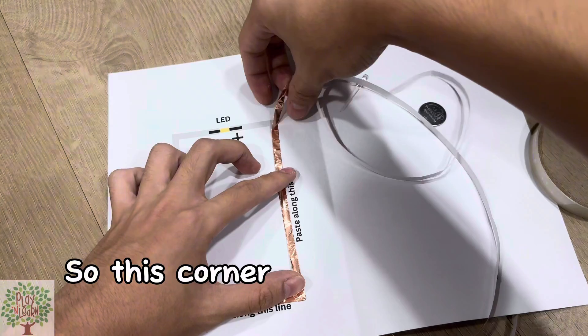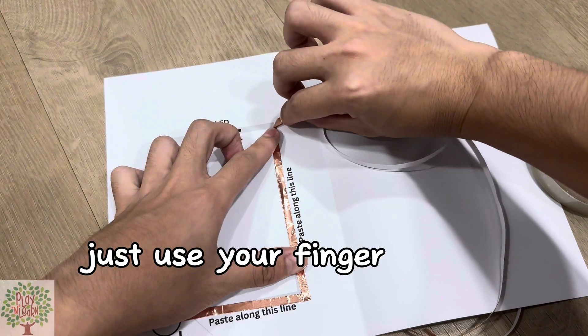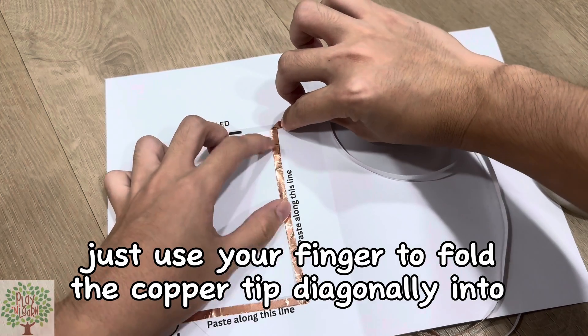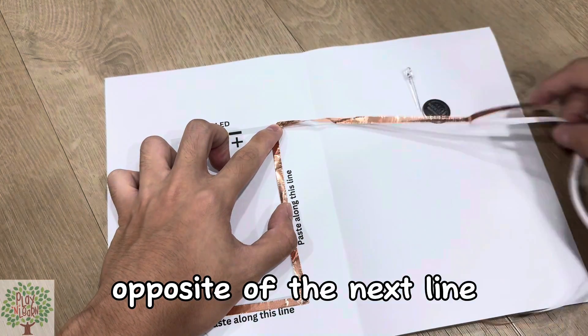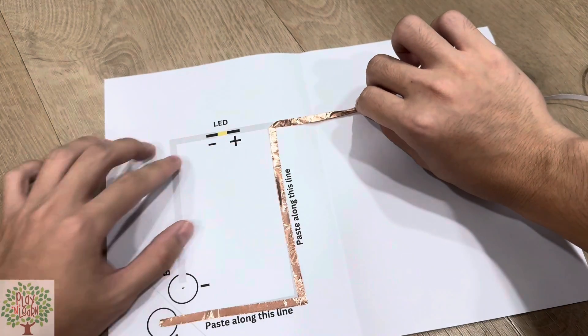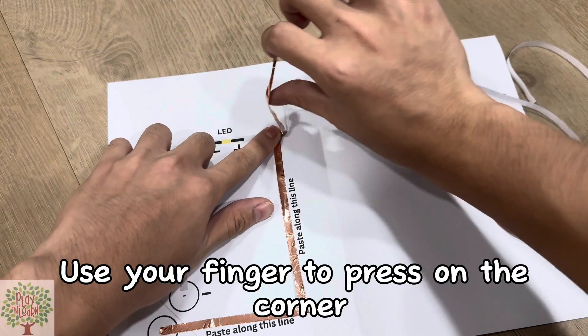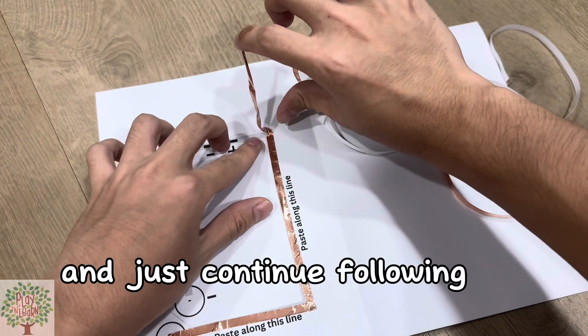So this corner, follow the exact same step as previous, just use your finger to fold the copper tape diagonally into half opposite of the next line. Use your finger to press on the corner and just continue following the line.